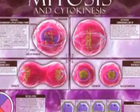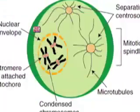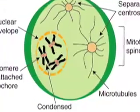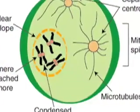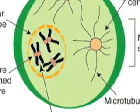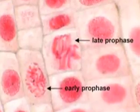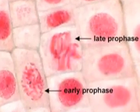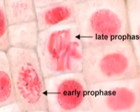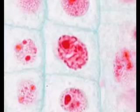Now mitosis can start as a continuous process. The first stage is prophase, when the nuclear membrane breaks down, the chromosomes condense, and they become visible to scientists. Spindle poles form, binding to the kinetochores.